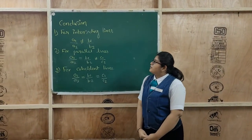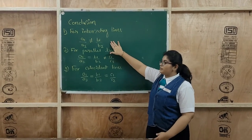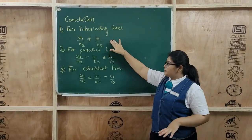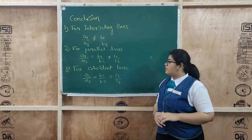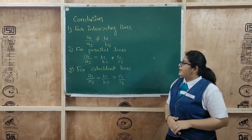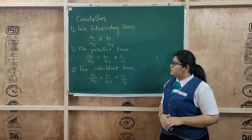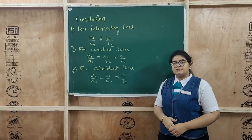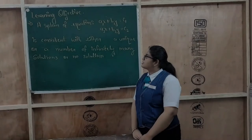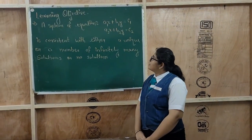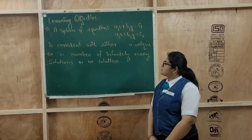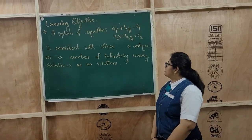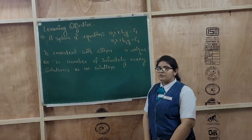Conclusion: For intersecting lines, a1 upon a2 is not equal to b1 upon b2. For parallel lines, a1 upon a2 is equal to b1 upon b2 but not equal to c1 upon c2. For coincident lines, a1 upon a2 is equal to b1 upon b2 is equal to c1 upon c2. The objective is verified: a system of equations a1x plus b1y equals c1 and a2x plus b2y equals c2 is consistent with either a unique solution or infinitely many solutions, or inconsistent with no solution.